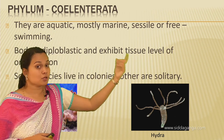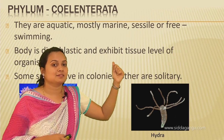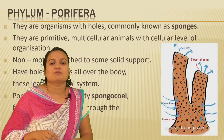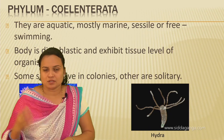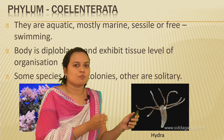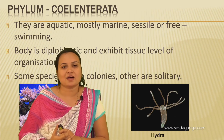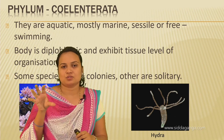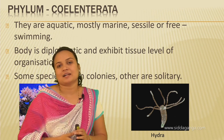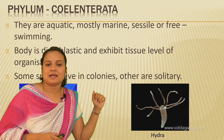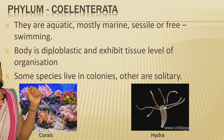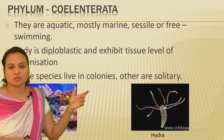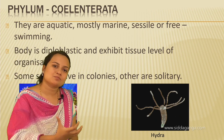Platyhelminthes are acoelomate — the body doesn't have any body cavity. They are covered by ectoderm, mesoderm, and endoderm but have no coelom. They exhibit organ level of organization, though the organs are not well developed — they are very basic. So from cellular level in Porifera, to tissue level in Cnidaria, we now reach organ level in Platyhelminthes.